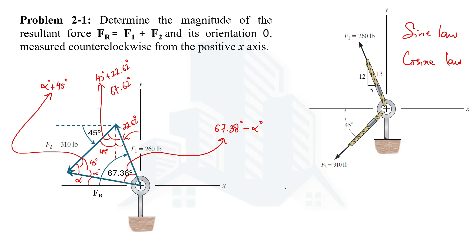Now let's use the sine law to first determine alpha, and once we have alpha we can determine theta — the angle measured from the positive x-axis to the resultant force — which equals 180 degrees minus alpha.